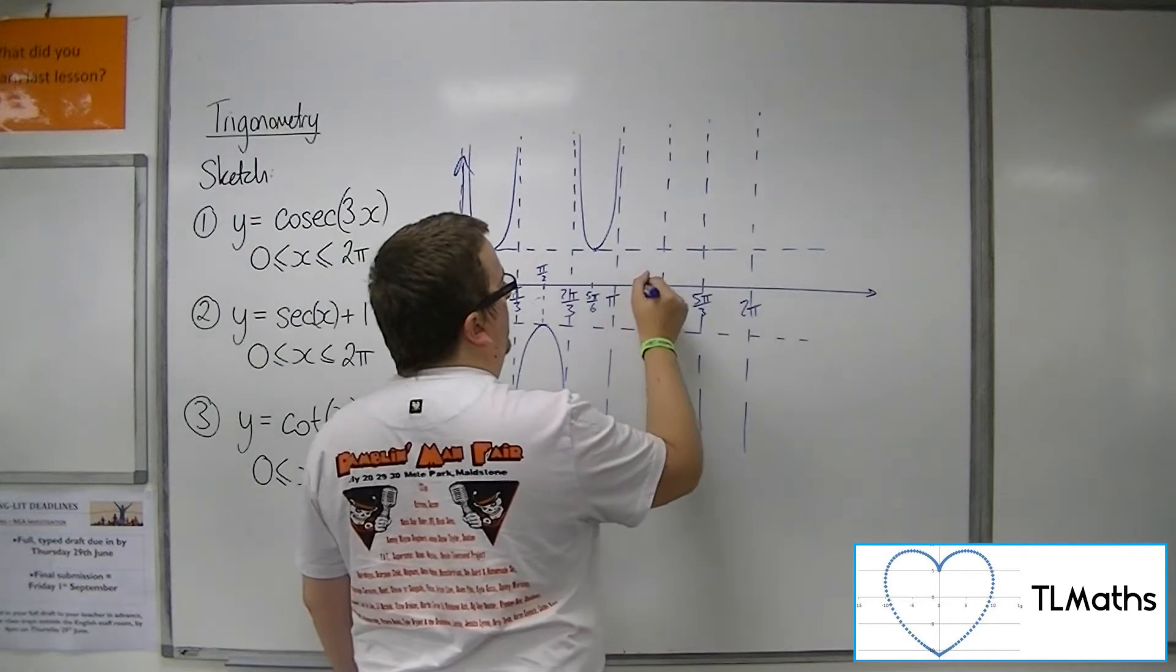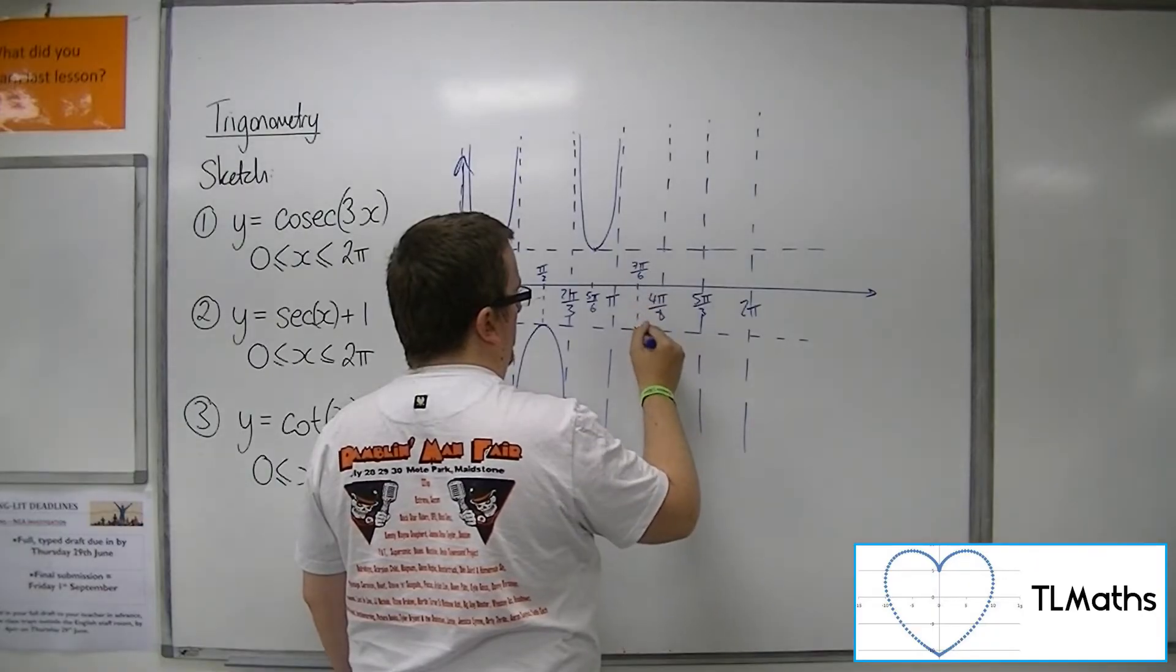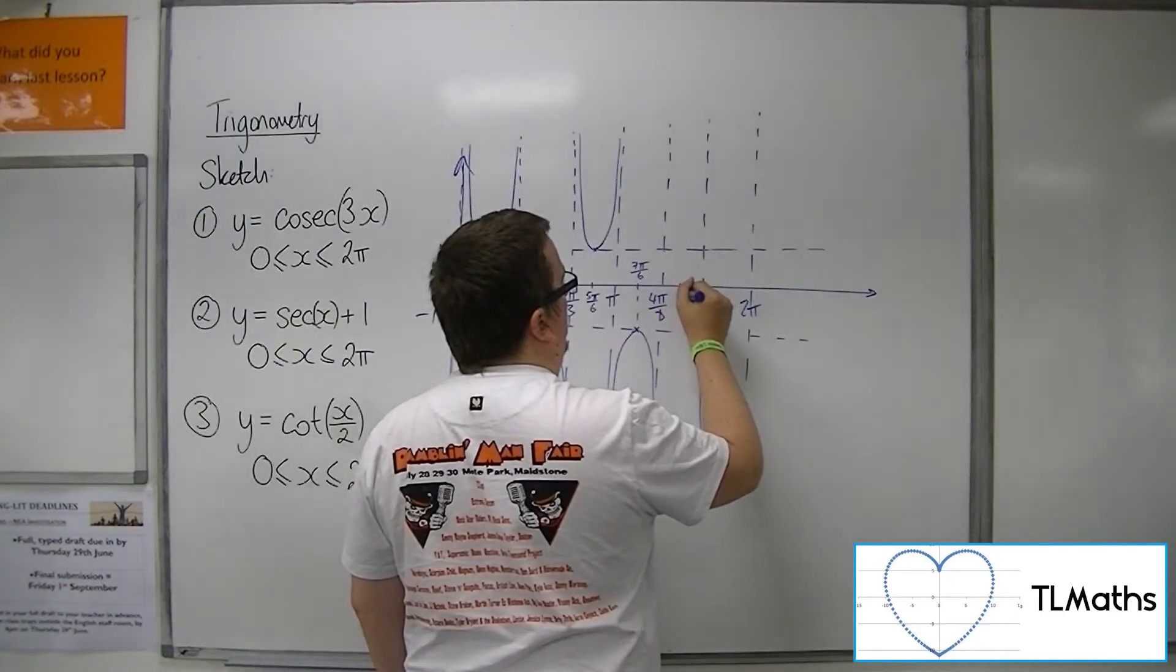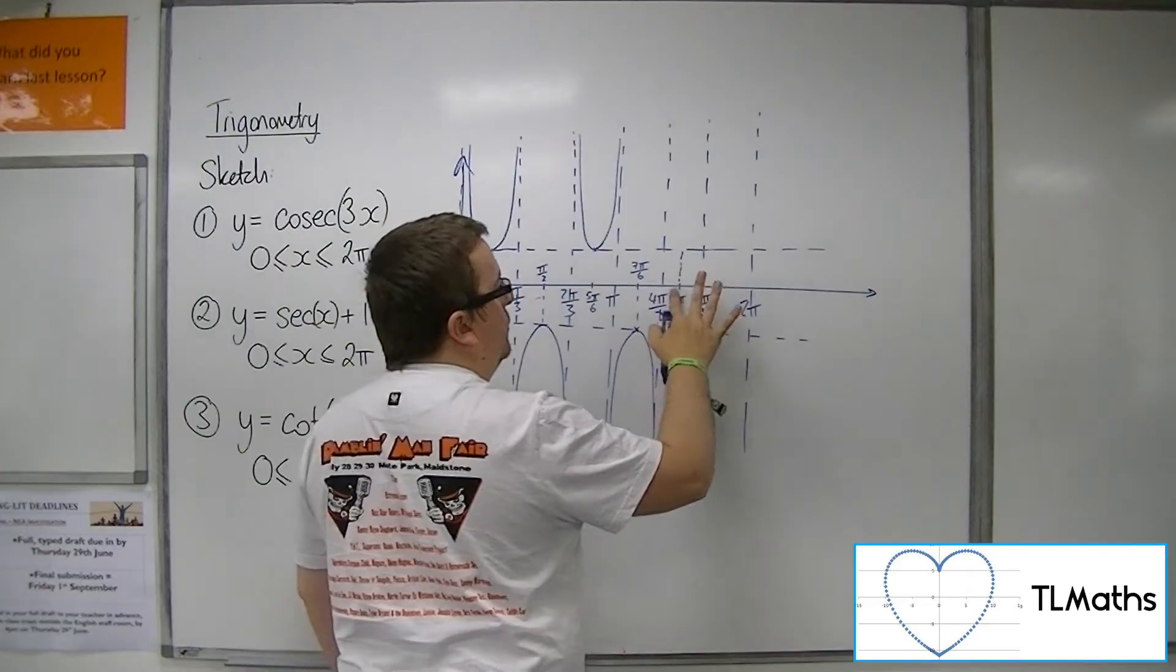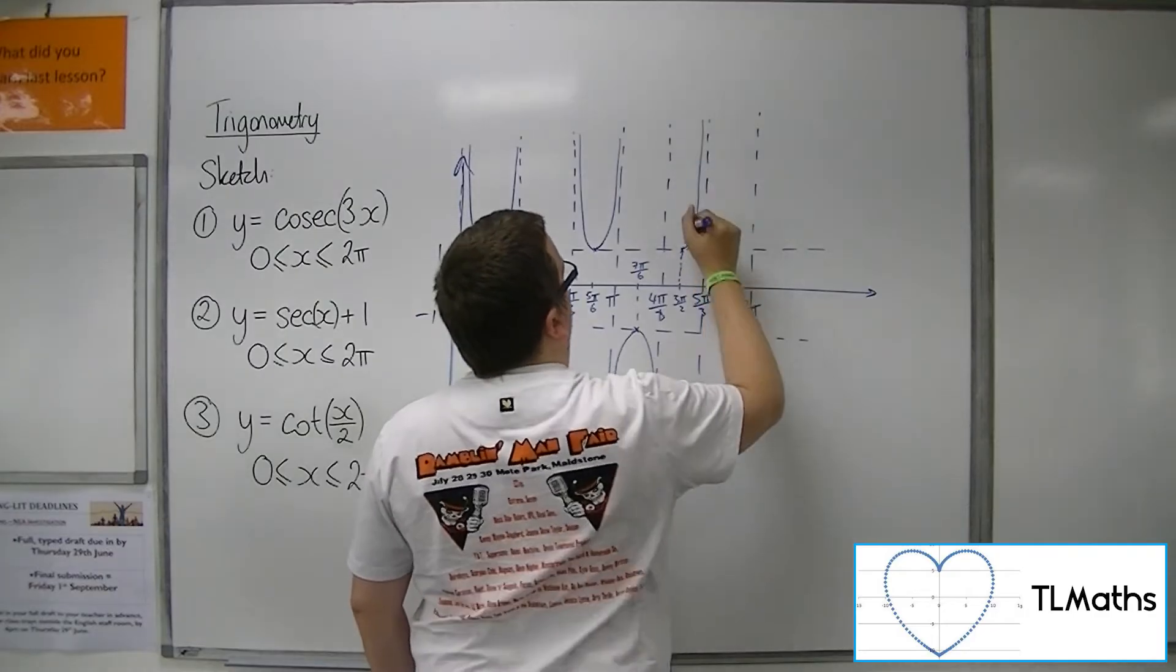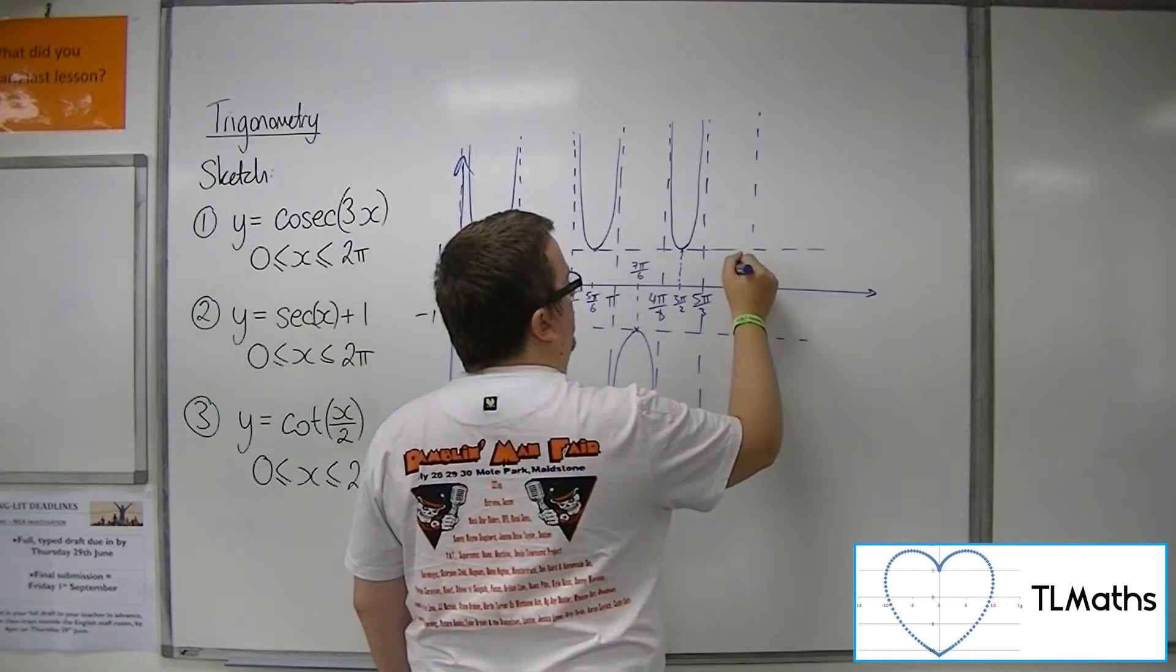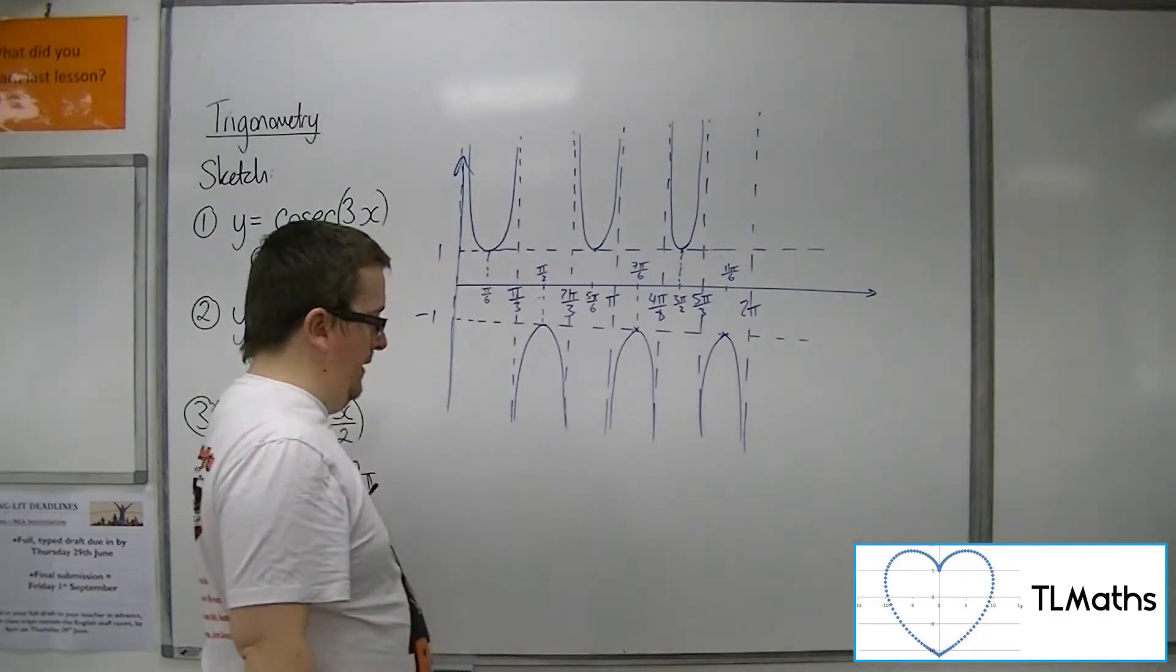Then we're going to have 6 pi over 6, 7 pi over 6. So here. Then we're going to have 8 pi over 6. Then we've got 9 pi over 6, or 9 pi over 6 is 3 pi over 2, I should really say. So that's that point there. I haven't drawn that one too well. So 9 pi over 6, 10 pi over 6, 11 pi over 6. So there. And that's my curve.